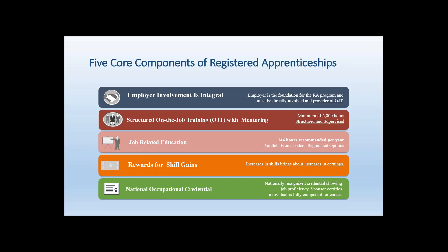Registered apprenticeships also include rewards for skill gain, specified within the contract, so that both the apprentice and the company understand what skills need to be achieved and the related rewards in terms of increased wages. Finally, registered apprenticeships result in a national occupational credential, and we'll also be talking about other industry-recognized credentials as part of the model we've proposed.